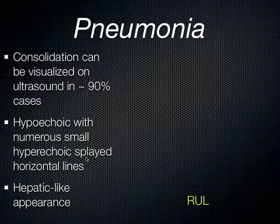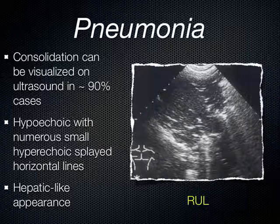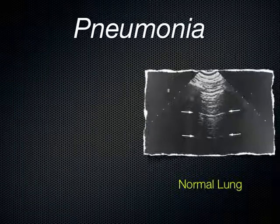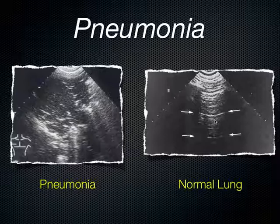A consolidation or pneumonia can be seen on ultrasound in up to 90 percent of cases. What you see is a hypoechoic area in the chest with numerous hyperechoic horizontal lines throughout — it actually looks like the liver. The term sometimes used is hepatization of the lung. You can see the difference between normal lung with repeating A-lines from the pleural line versus losing those A-lines and seeing a consolidation or hepatization.